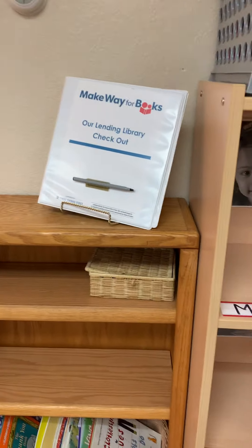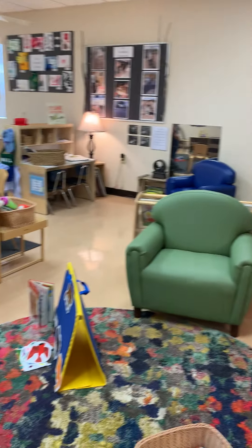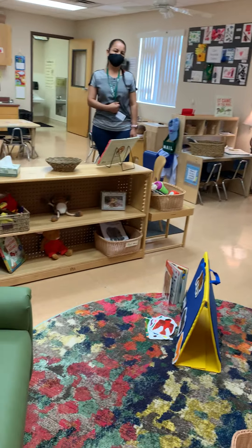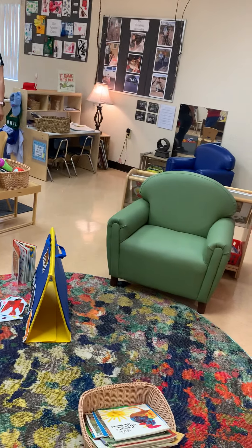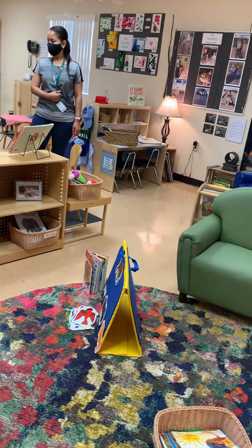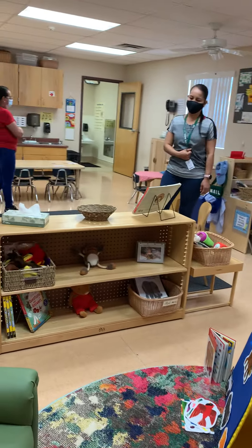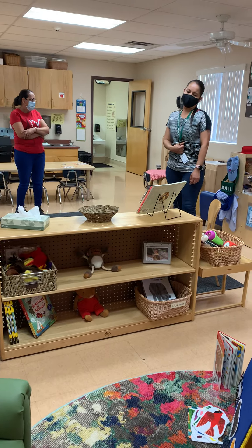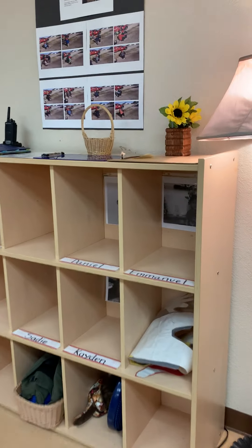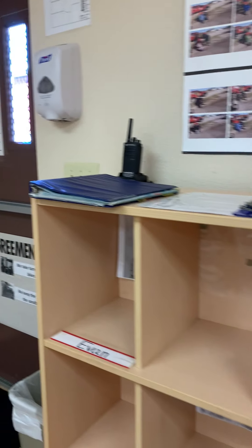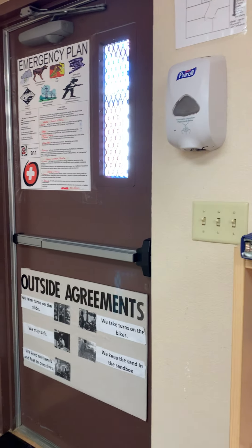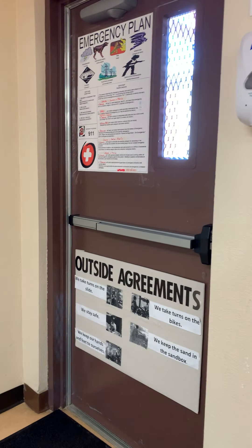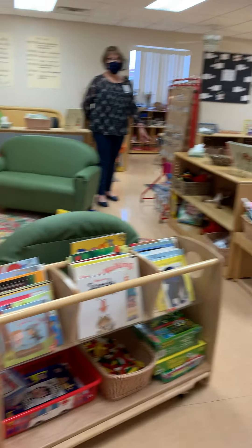This is our area where children can check out books to take home. This is our quiet area where we can read books. We can use the felt board. We have puppets, stuffed animals, and more cubbies over on this side. This is a door to our outside area, and we have more books here.